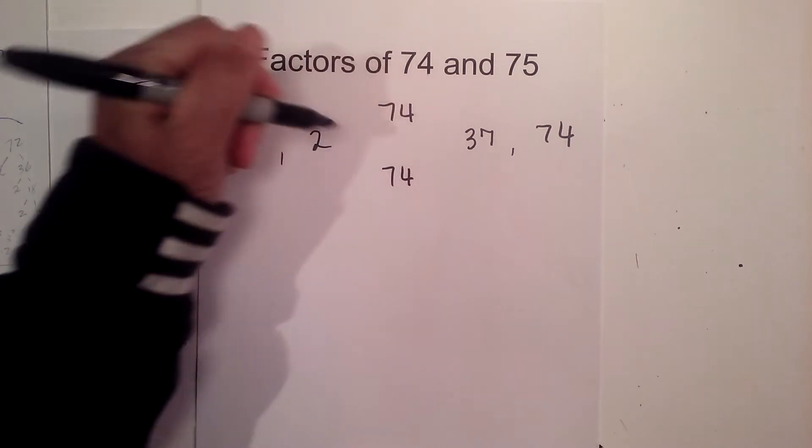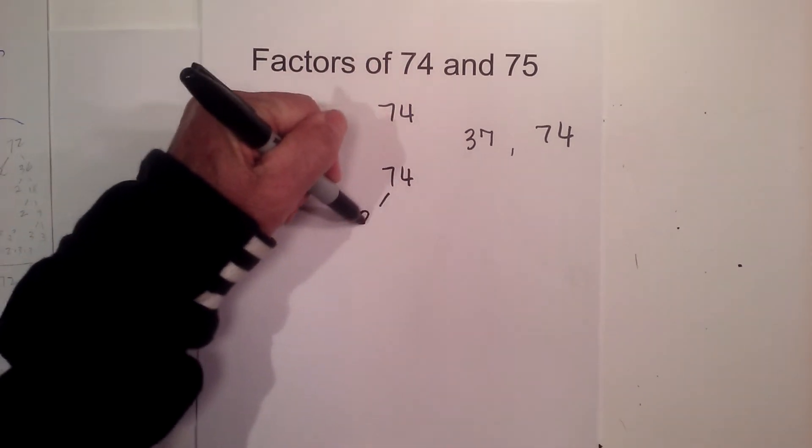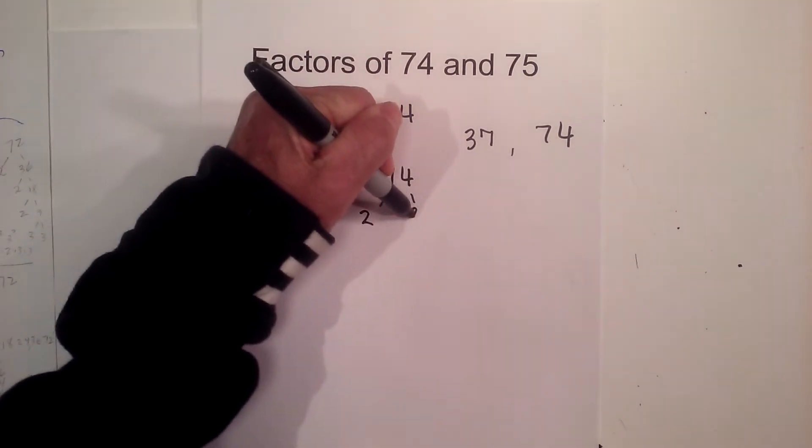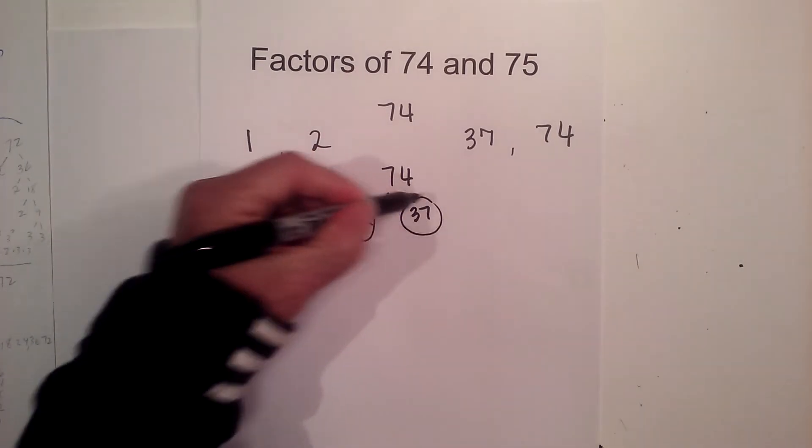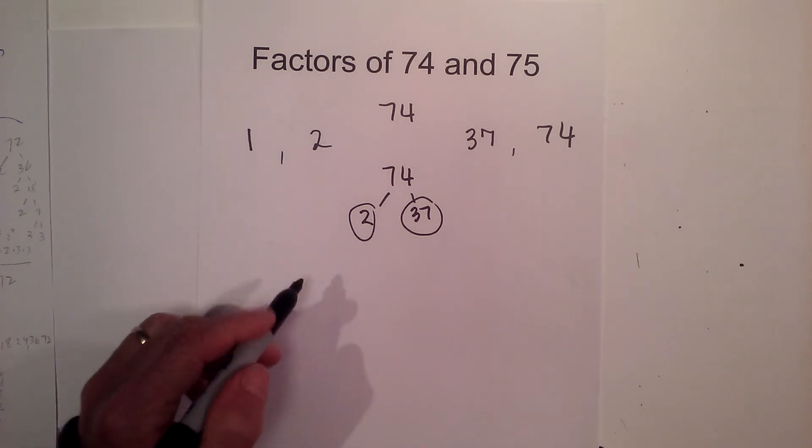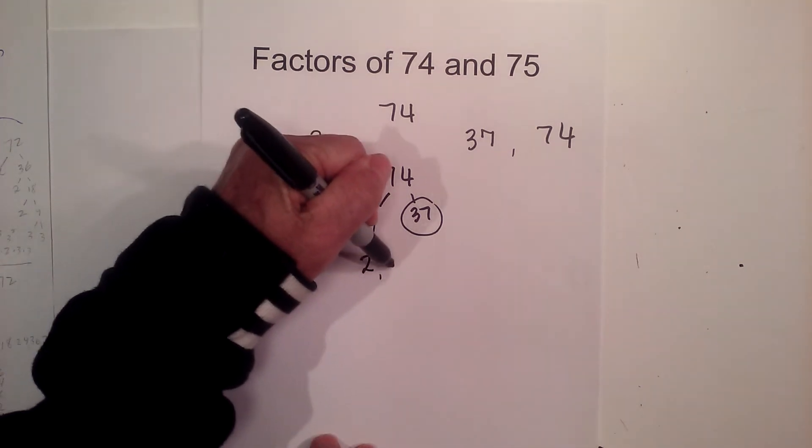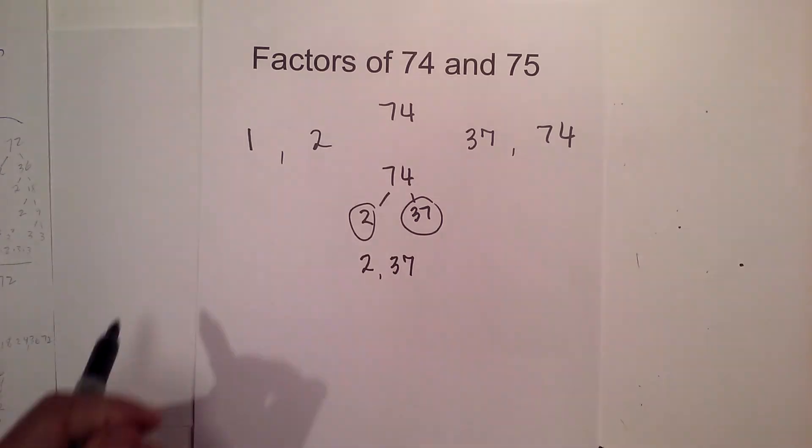And if you complete a factor tree for 74, 2 goes into 74 37 times. They're both prime numbers. Therefore, the prime factors of 74 are 2 and 37.